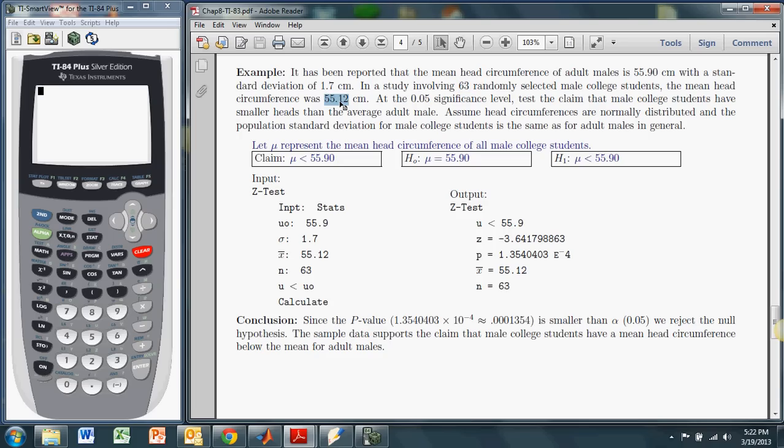So the mean from the sample is clearly below the mean from the population for adult males. And so we want to test the claim that male college students have, on average, smaller heads than adult males. It seems like as good as anything to test, right?